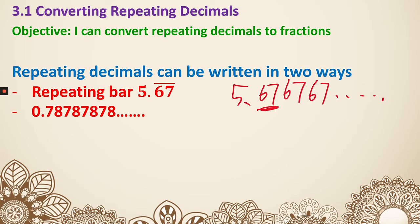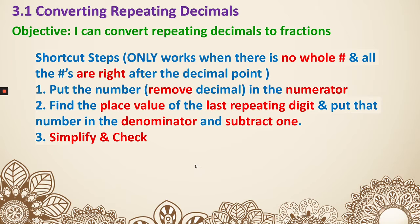The second way to write it, whichever digit is repeating, we write it, then we put dot dot dot after that. Now let's see how we can change repeating decimals to fractions. This is the shortcut way, but it only works when there's no whole number and all the numbers are right after the decimal point.